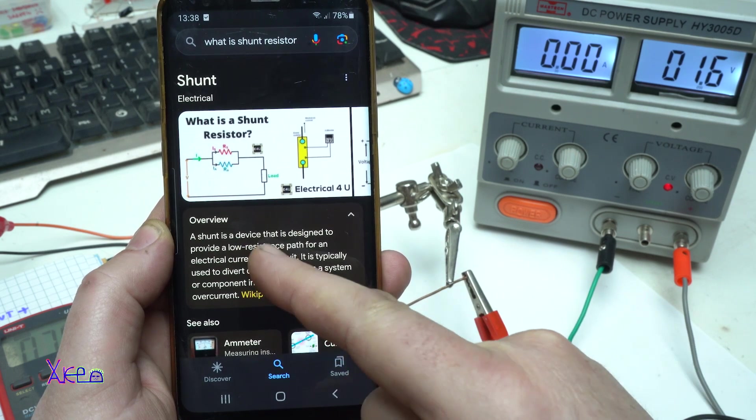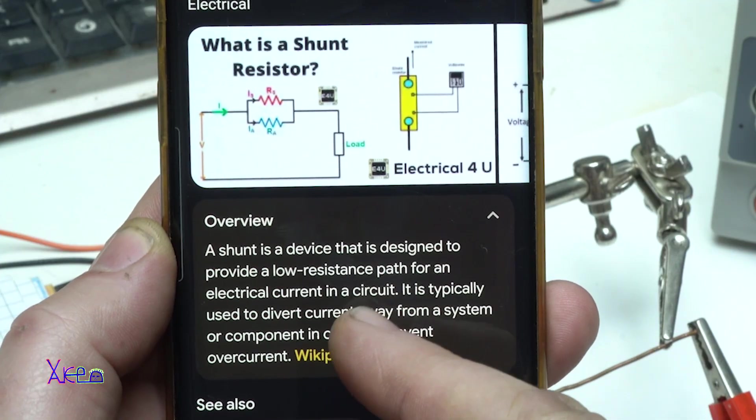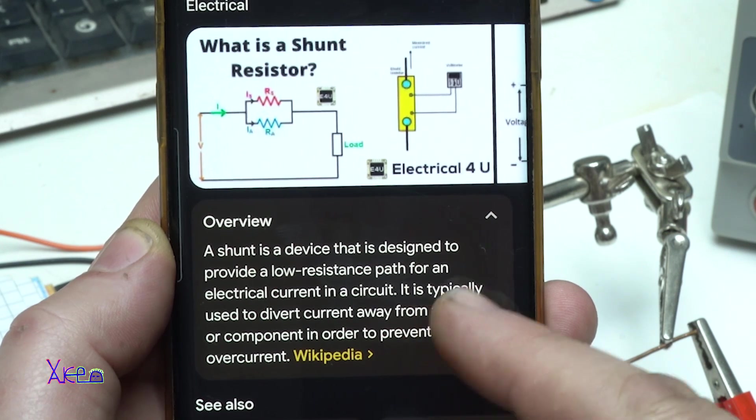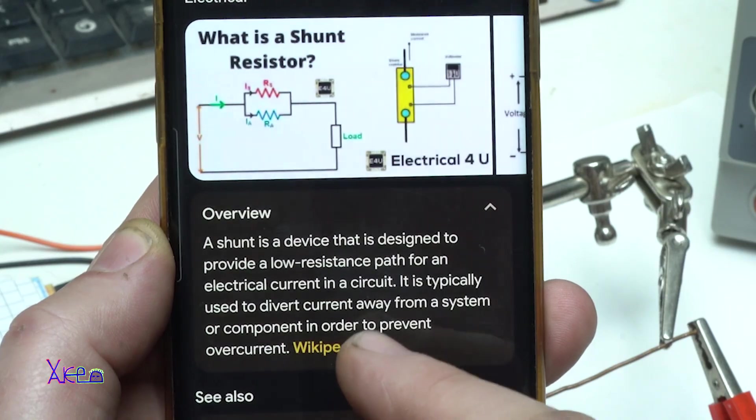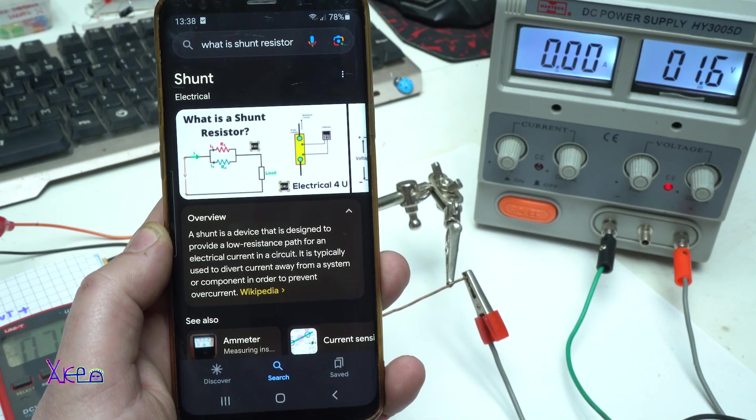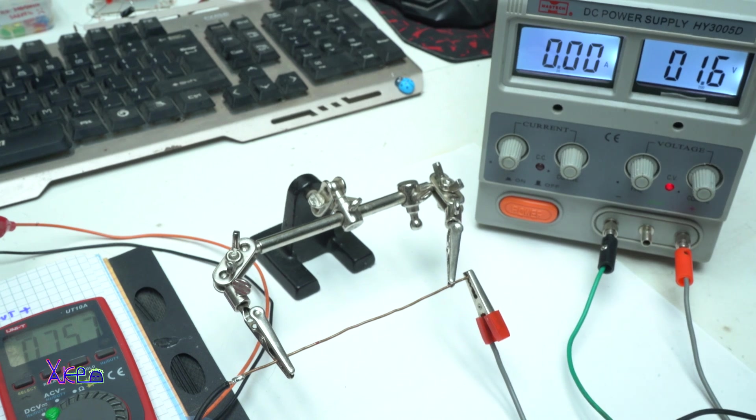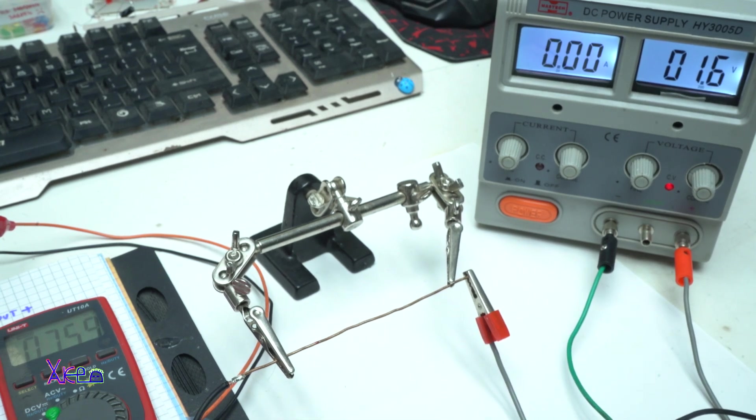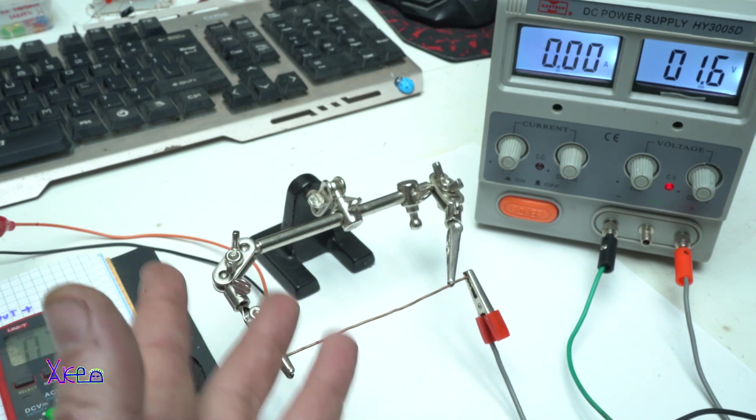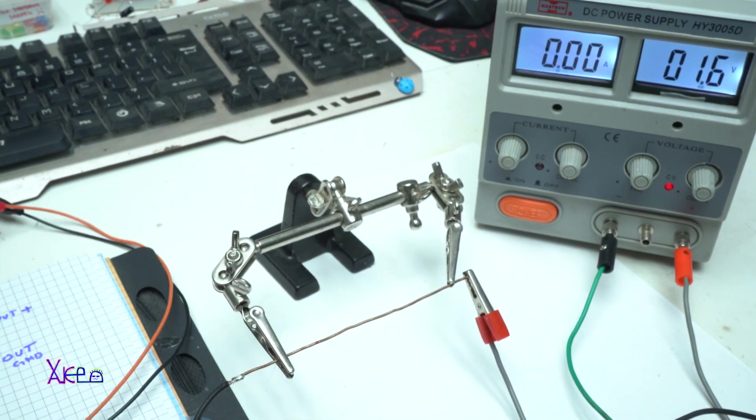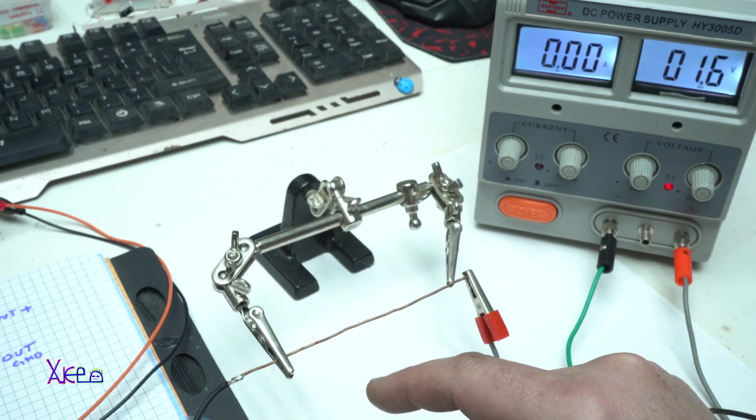A shunt is a device that is designed to provide a low resistance path for electrical current in a circuit. It is typically used to divert current away from a system or component in order to prevent over current. So if you want to measure high power currents you need a shunt resistor. In this case I'm using my homemade resistor out of solid copper wire, 7.5 centimeters long.